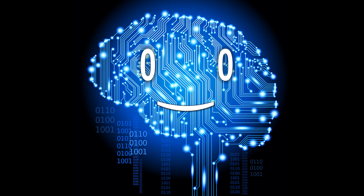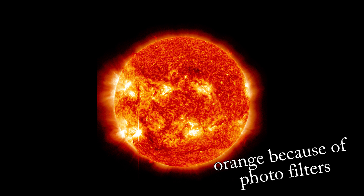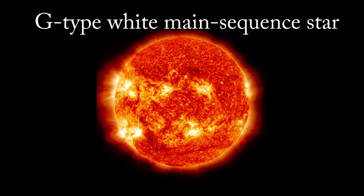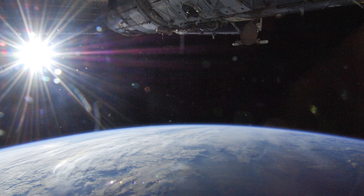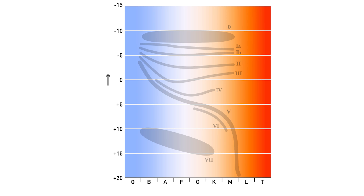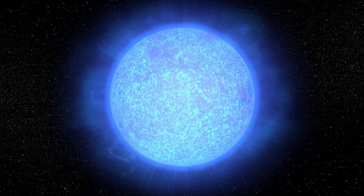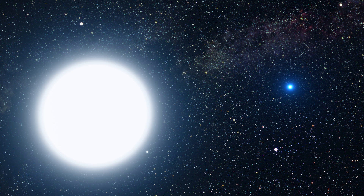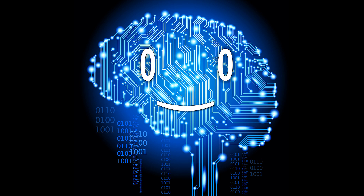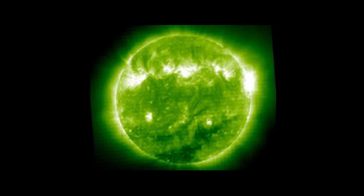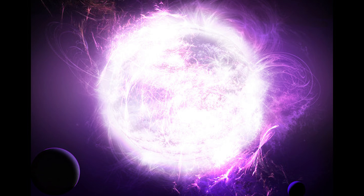So by definition, the Sun is a G-type white main sequence star. Other than white, like our Sun, there are plenty of other colors that stars can have — from red and blue super giants, yellow, white and brown dwarfs, to black holes. A lot of colors, except green, purple, and pink.